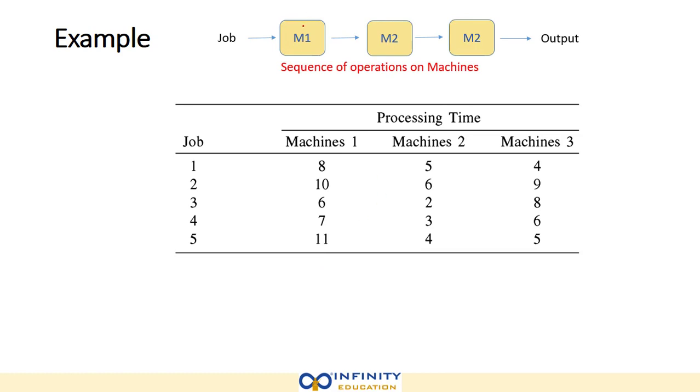Here you can see that we have the sequence of operations on each machine for individual jobs defined. Job one will first be machined on M1, then M2, and then M3.